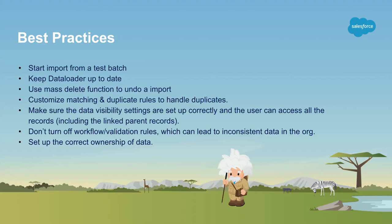The mass delete function in data loader is useful if you get into a situation you're unhappy with — because you have the list of records that were updated, you can generate a file of the IDs you want to delete and then mass delete using that tool. Also, in the org, you have matching and duplicate rules which can be configured through clicks-not-code. Make sure visibility settings are properly set up and that the user of the tool has access to create child records when uploading records for others. We recommend you do not turn off workflow and validation rules, as that can lead to inconsistent data.